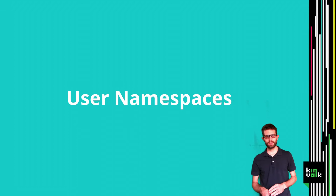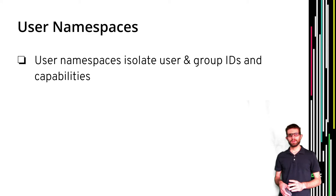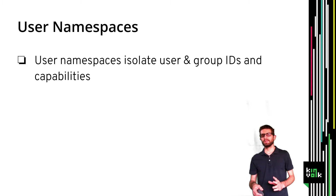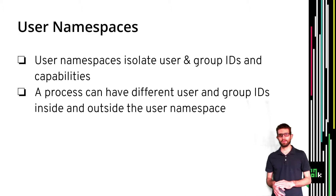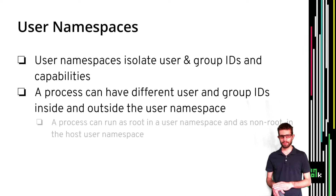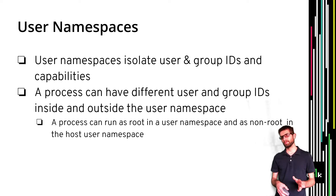Let's go into some details of user namespaces and why they are important for increasing security. User namespaces are just another kind of namespace in the Linux kernel. The resource that is isolated this time is the user and group IDs and also the capabilities. Regarding user and group IDs, we can have a process that has different IDs inside and outside a user namespace — specifically, a process running as root inside a user namespace can be running as non-root outside.